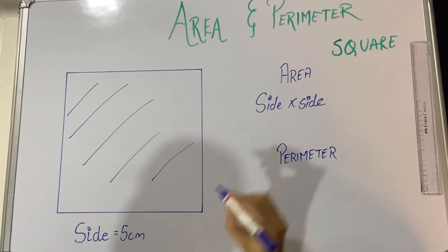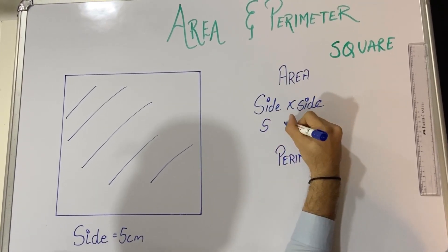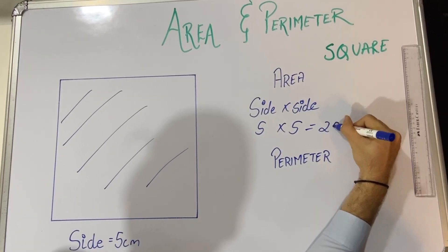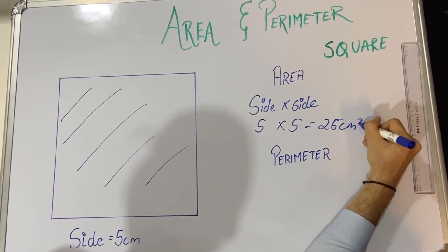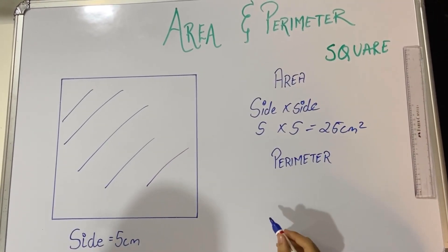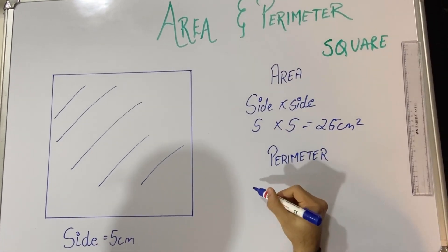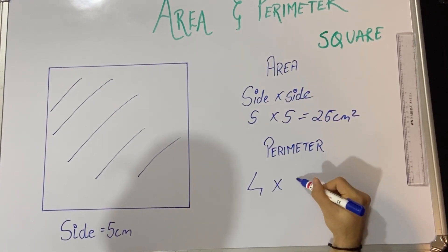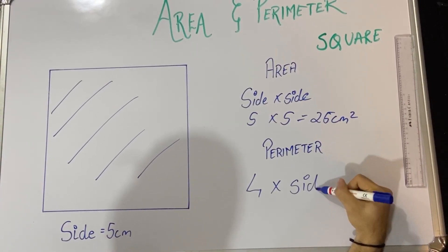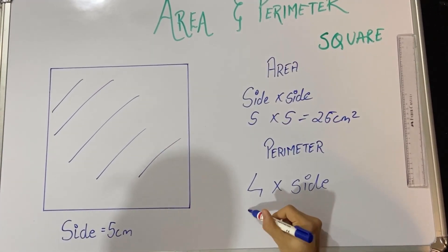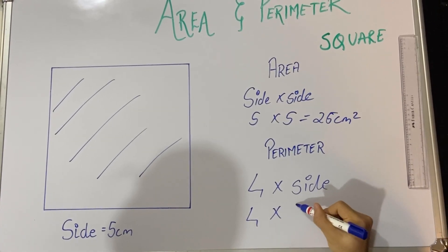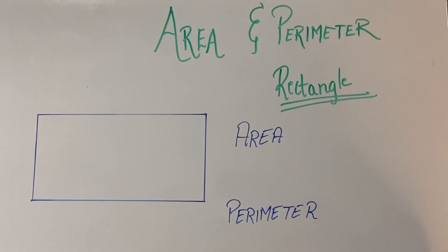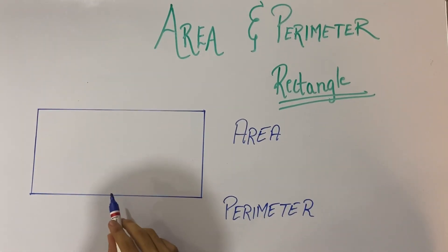So 5 centimeter into 5 centimeter gives me 25 centimeter square. The perimeter is the sum of all the sides, or you can write it as 4 into side, since a square has 4 equal sides. So 4 into 5 is 20 centimeter. I hope you are noting it down; if not, kindly do it for your future reference.